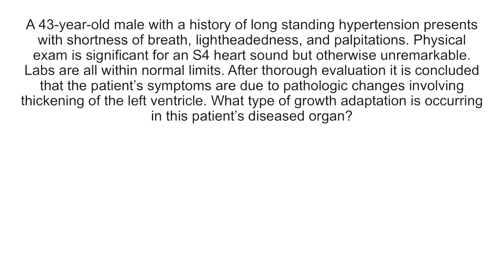What type of growth adaptation is occurring in this patient's diseased organ? Based on the question, you may have been able to appreciate that the patient has left ventricular hypertrophy. We're interested in the thickening of the left ventricle and the cellular mechanism by which it's happening. In order to get this question right, you had to have recalled that the three permanent tissues are neurons, skeletal muscle myocytes, and cardiac myocytes.